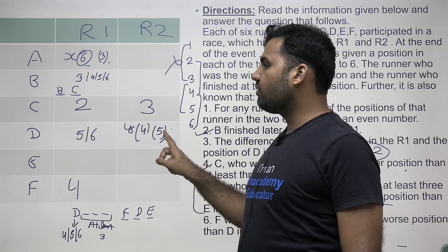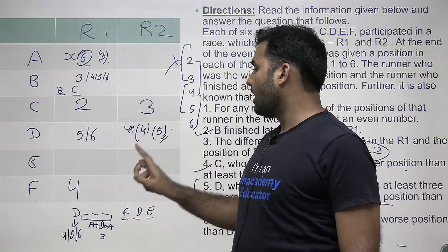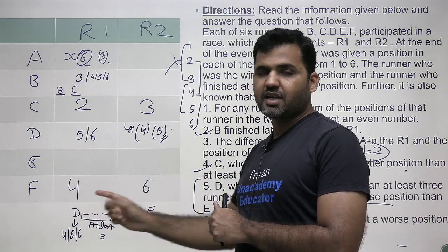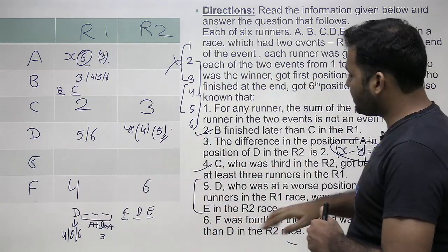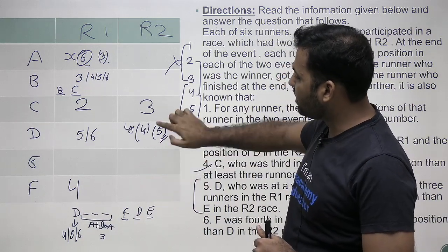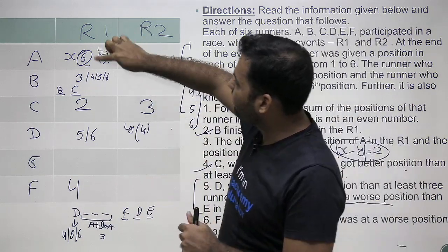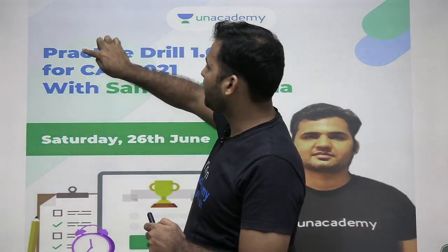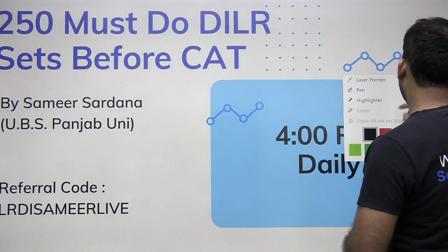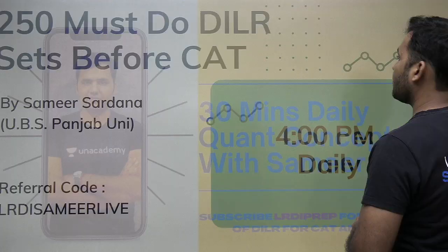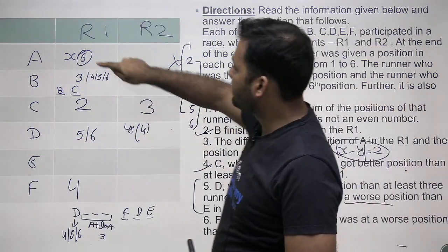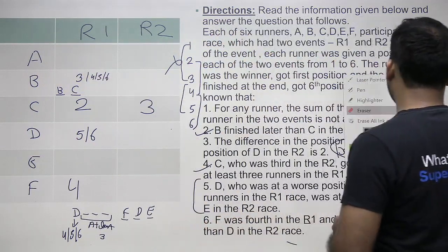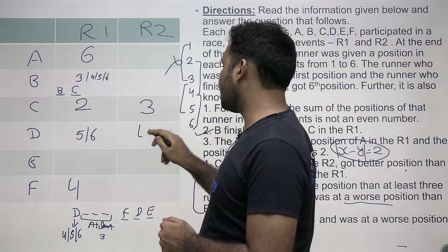If we take the case A=3 in R1 and D=5 in R2, then to make F's rank worse than D's rank of 5 in R2, we'd need to give F rank 6. But F's R1 rank is 4, and 6 plus 4 equals 10, which is even — this violates the parity constraint. So this case is eliminated. That means the only valid case is A=6 in R1 and D=4 in R2.